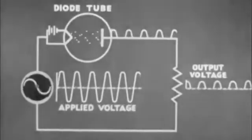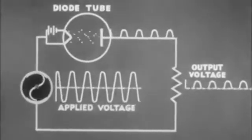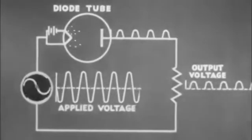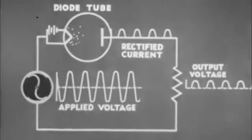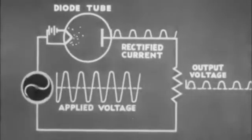The diode tube is a rectifier. In the circuit, it results in waves of pulsating current and voltage. Electrons pass through the plate only during the positive half of the wave.